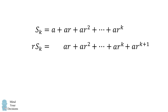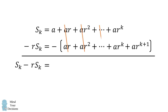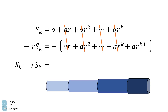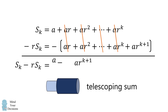Let's now subtract the second equation from the first. The result on the left-hand side will be Sk minus r multiplied by Sk. On the right-hand side, we have some interesting cancellations: ar will cancel, then ar squared will cancel, and so on. All of the terms in the middle will cancel. This is reminiscent of a telescope that retracts upon itself, and only the beginning and end survive — for this reason, it's called a telescoping sum.